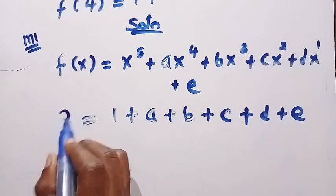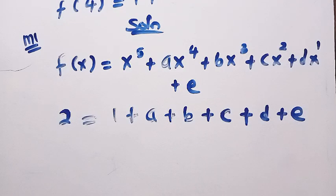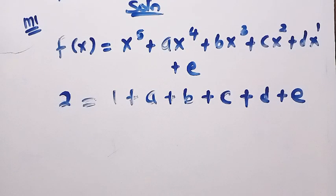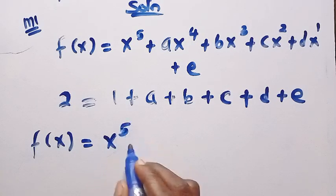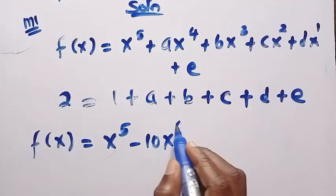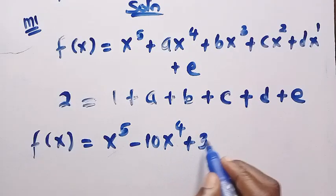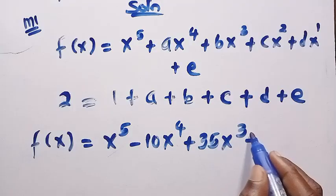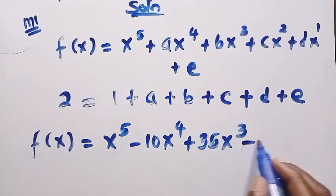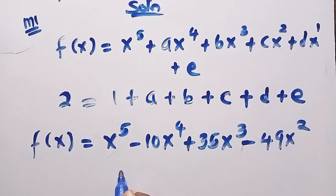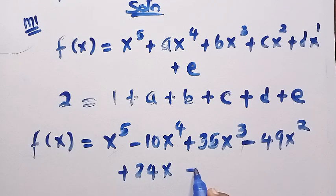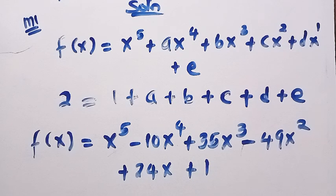This is what we have for the first equation. If we check for the second equation as well, we have something of this nature. We will later solve this by a system of linear equations. We are going to get this general method, which I'm not going to show, as f of x equals x raised to the power of 5 minus 10x raised to the power of 4 plus 35x raised to the power of 3 minus 49x raised to the power of 2 plus 24x plus 1.